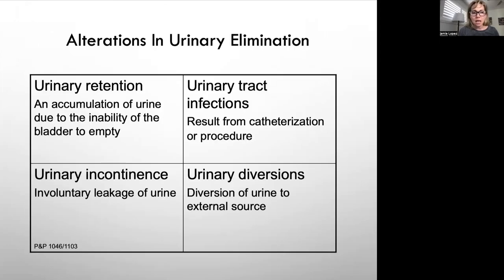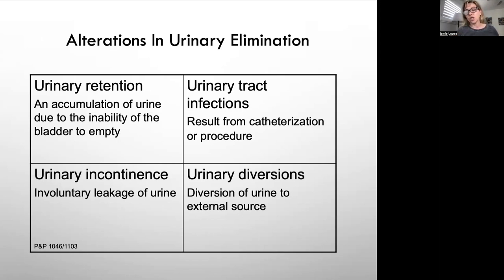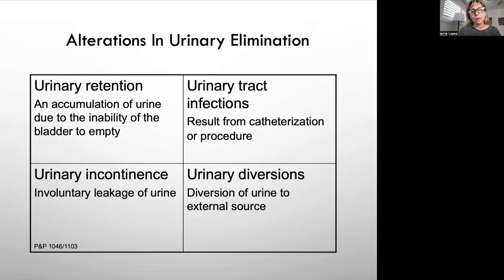Urinary retention is an accumulation of urine due to the inability to empty the bladder. This could be from a urinary stone blocking the urethra, an enlarged prostate, or a tumor. Bladder distension is apparent and you can check how much urine is in the bladder using a bladder scanner. A patient with true urinary retention will void about two to three times per hour but won't feel any relief, which is a good indication to use the bladder scanner.